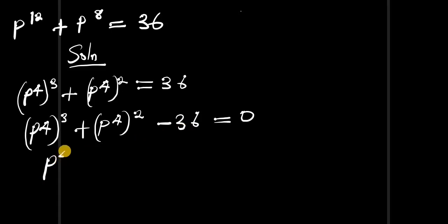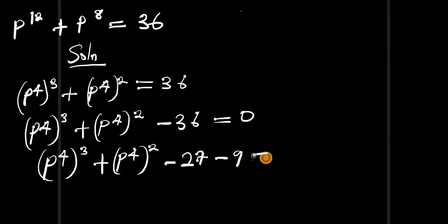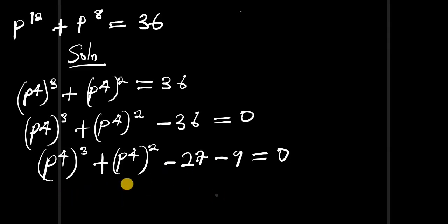We have p to the power of 4, all to the power of 3, plus p to the power of 4, all to the power of 2, then instead of 36 we write minus 27 then minus 9, equals zero. Because 3 to the power of 3 is 27 and 3 to the power of 2 is 9 — that's why we split 36 into this form.